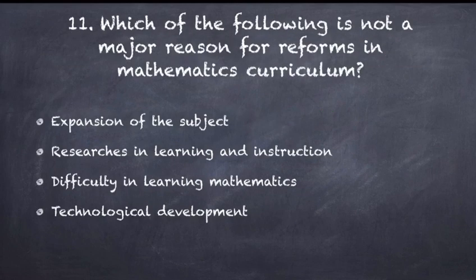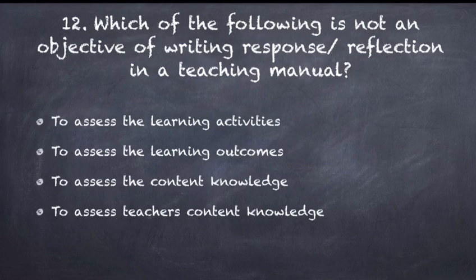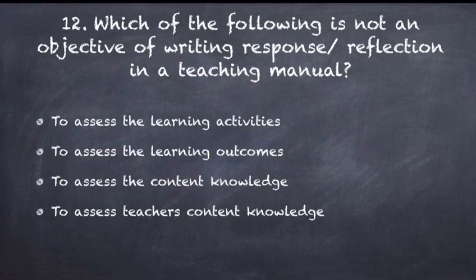Which of the following is not a major reason for reforms in mathematics curriculum? The answer is the third option: difficulty in learning mathematics. Next: which of the following is not an objective of writing response or reflection in a teaching manual — to assess learning activities, learning outcomes, content knowledge, or teacher's content knowledge? The answer is teacher's content knowledge.